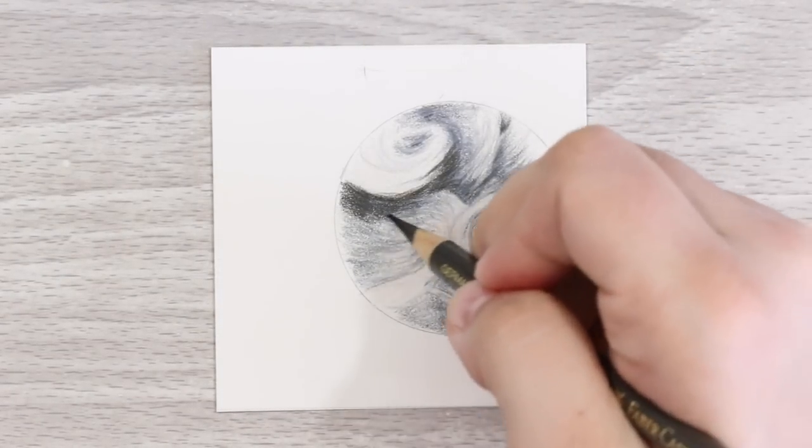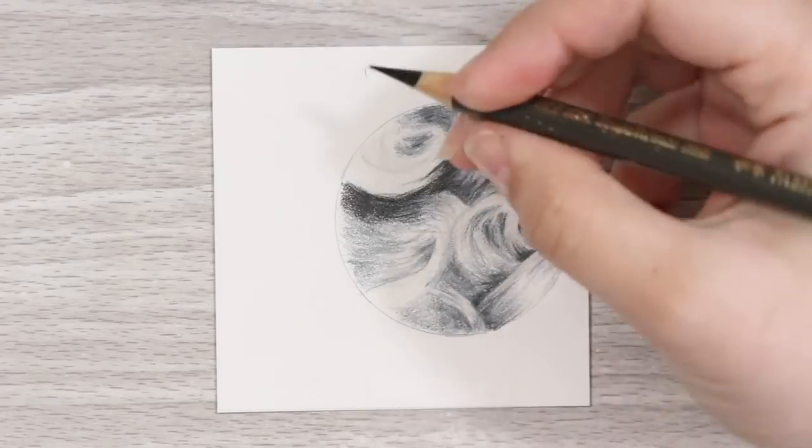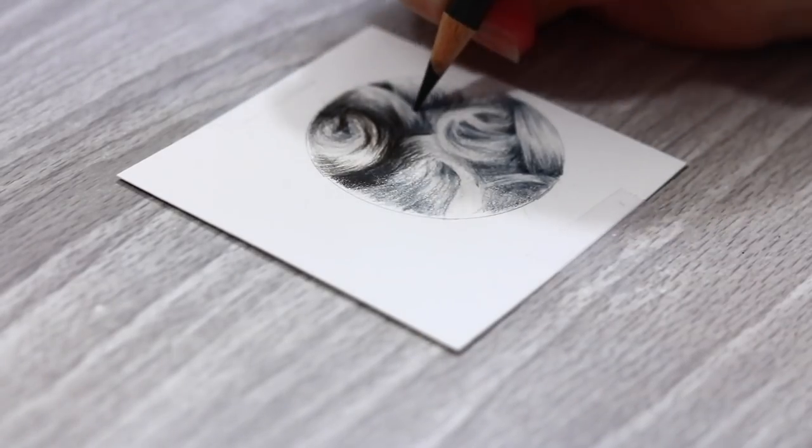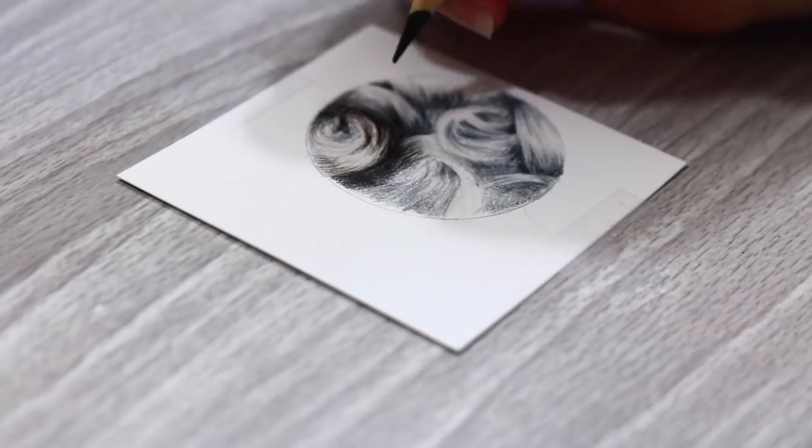Once I've got those in my mind I work section by section again gently layering and building the super duper dark tones. I also use a white pencil to blend every now and then just to keep everything nice and smooth.